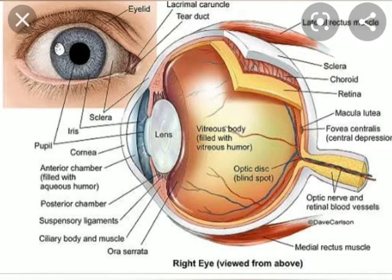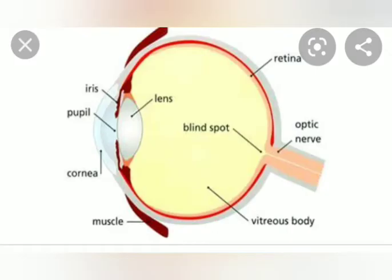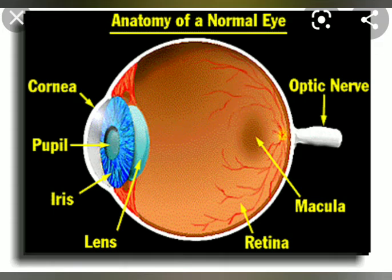Retina: it is the light-sensitive inner lining at the back of the eye where images are formed. Pupil: it is the black spot in the front of the eye. It is actually a circular opening through which light enters the eye.